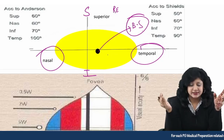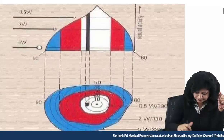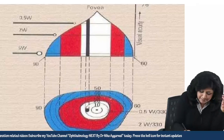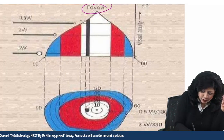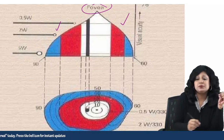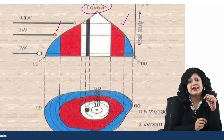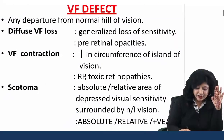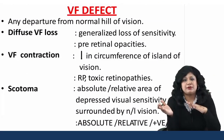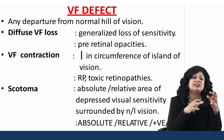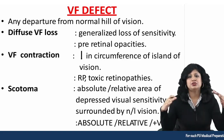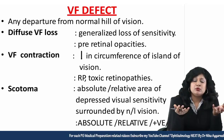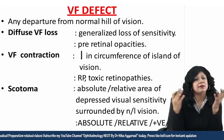This is your island or hill of vision. You can see the peak — peak is your fovea and we have got two slopes here, corresponding to the temporal side and the nasal side. Now, if I talk about the visual field defects, anything which is deviating from this normal hill of vision will be my visual field defect. It can be diffuse loss, it can be localized, it can be less, it can be more.